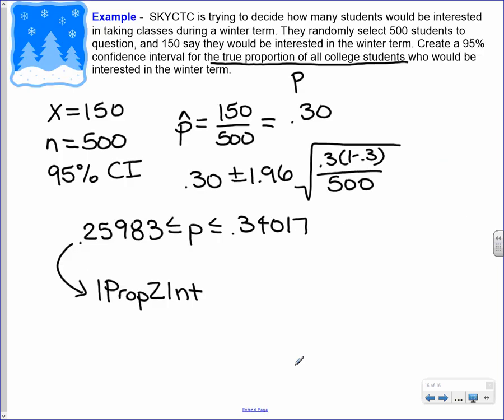And then this one is just another example of how to do the confidence intervals. Here, we had to actually calculate our p-hat value. So p-hat equals 150 over 500, and we get 0.3. Then for our confidence interval, if we were doing it by hand, we do the 0.3 plus or minus 1.96 comes from the 95% confidence that we want. We do 0.3 times 1 minus 0.3 divided by 500, and the square root of that. The other way you can do this is you can do the 1 proportion z interval on your calculator. You use x equal to 150, n equal to 500. You do 95% confidence, and this is going to be the interval you get, 0.25983 to 0.34017.